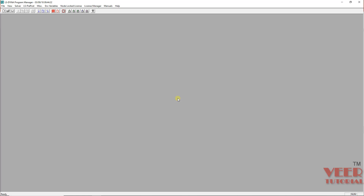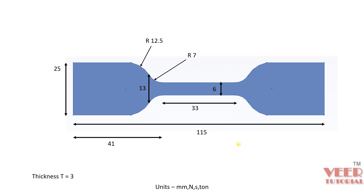First let's understand the problem, then we will solve it in LS-PrePost. We have a specimen with the dimensions highlighted here — the major vertical dimension and the horizontal dimension, which is the width and length. This is a standard test specimen with a larger cross-section at the ends and a smaller cross-section in the middle, where we will observe the stresses. The thickness of this part is 3 mm and the unit system we are following is mm, Newton, second, and tons for mass.